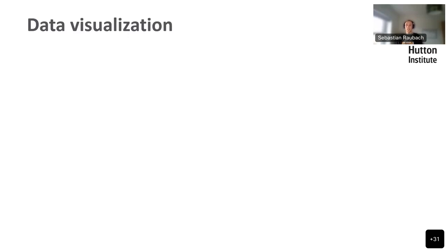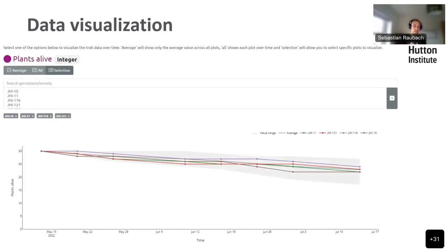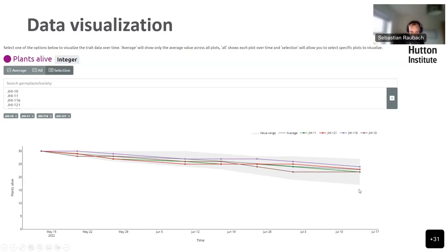Now let's look at some visualizations. There is one visualization type recently added specifically for multi-measurement traits — those being scored multiple times through the season. In this case, we're looking at plants alive. We've selected four plots, each represented with a line in the diagram. You can see they all start at 30 because we planted 30 plants per plot, and as time progresses, the number of plants alive decreases. The gray area in the background shows the whole value range — the upper edge showing plots with more plants alive, and some plots with only around 18 plants left.